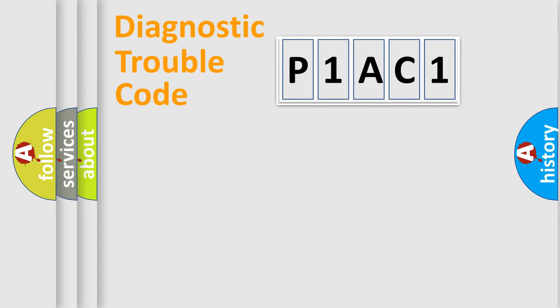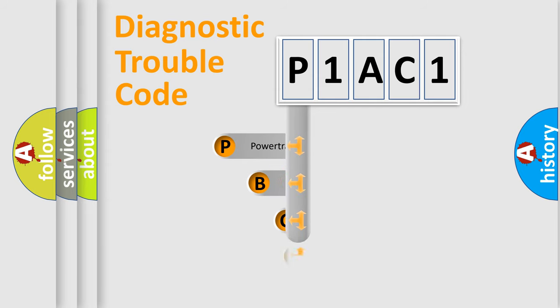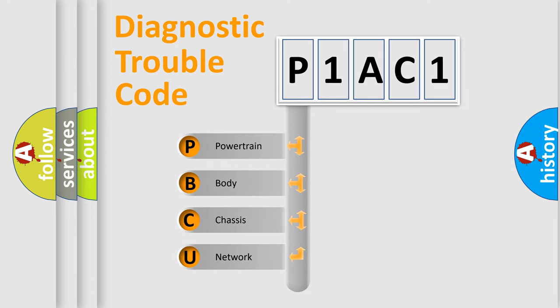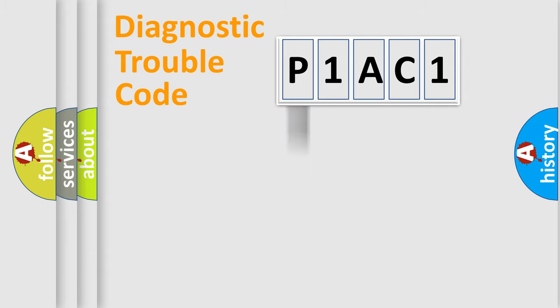First, let's look at the history of diagnostic fault code composition according to the OBD2 protocol, which is unified for all automakers since 2000. We divide the electric system of the automobile into four basic units: Powertrain, Body, Chassis, and Network. This distribution is defined in the first character of the code.